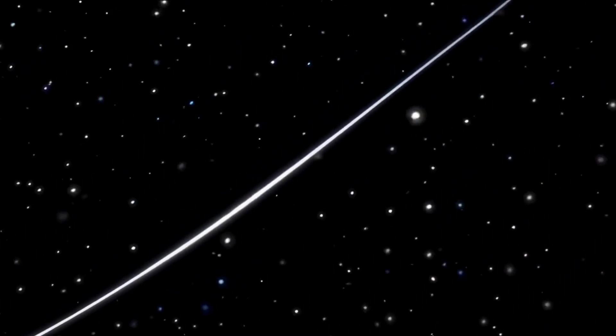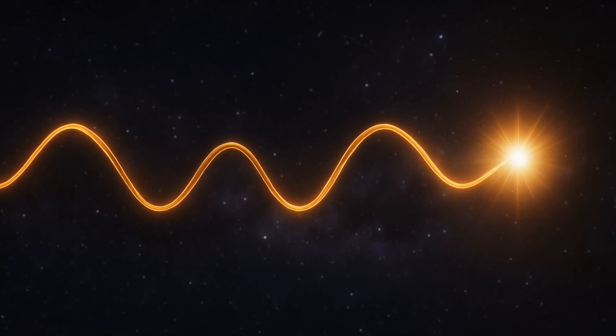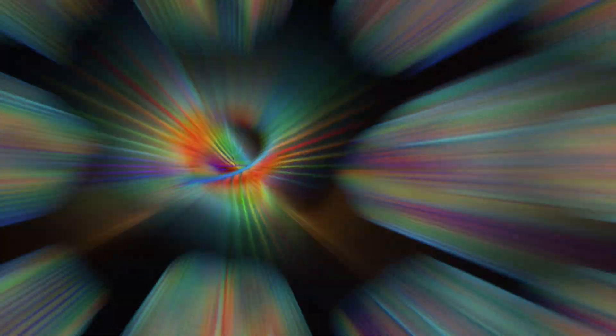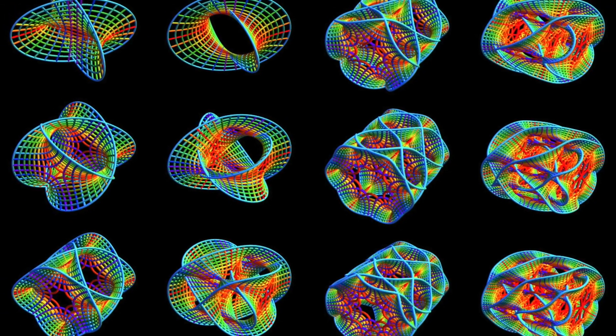So, what does string theory say about all this? According to string theory, the smallest building blocks of the universe aren't fixed point-like particles, but rather vibrating, incredibly tiny filaments of energy called strings. These strings vibrate in different ways, and each vibration gives rise to a different particle, such as an electron or a quark.